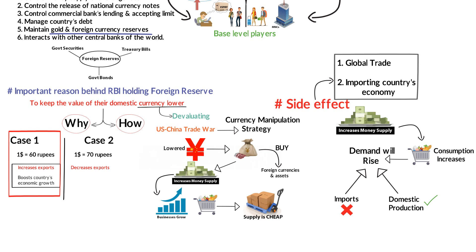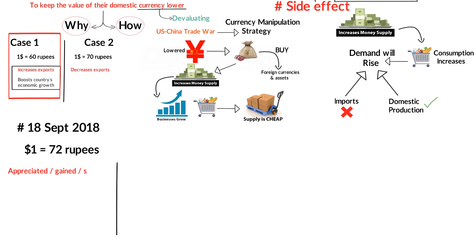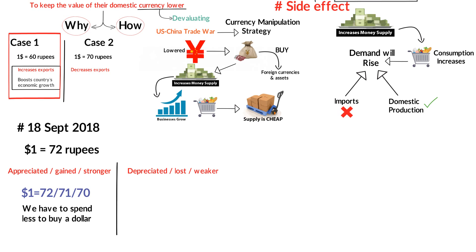This is the manipulation strategy China used against the United States, which also briefly explains the entire trade war between them. As of 18th September 2018, 1 dollar equaled 72 rupees. When the news says the rupee has become stronger, gained points, or appreciated, it means 1 dollar goes from 72 to 71 to 70 — the rupee number goes down, meaning we spend less to buy a dollar. Conversely, if the rupee depreciated, lost, or became weak, 1 dollar goes from 72 to 73 to 74 — the rupee number goes up.